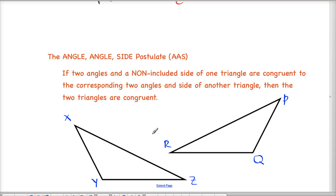Okay, and this says if two angles and a non-included side of one triangle are congruent to the two corresponding angles and side of another triangle, then those two triangles are congruent. So in this picture here, I have my two triangles, and again, I'll have angle X congruent to angle P, and then I'll have angle Y congruent to angle Q. So I have two angles that are congruent.